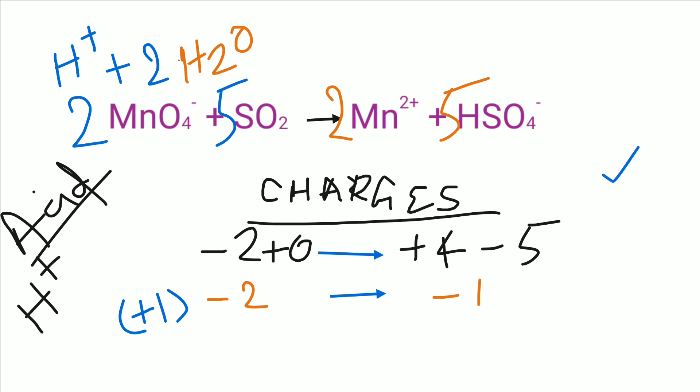The balanced equation is: 2 moles of water plus 1 mole of hydrogen ion plus 2 moles of permanganate ions and 5 moles of sulfur dioxide gives 2 moles of manganese ions and 5 moles of bisulfate ions or hydrogen sulfate ions.